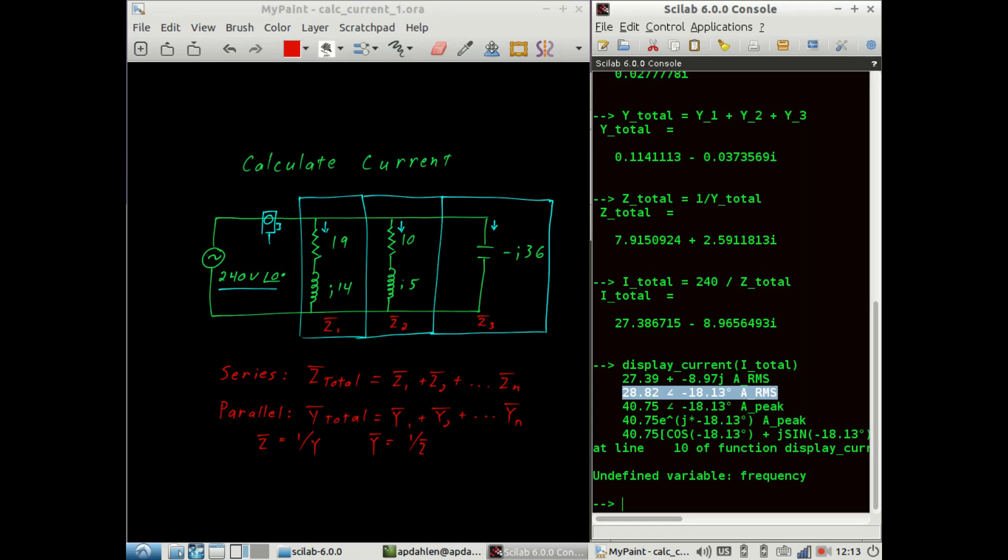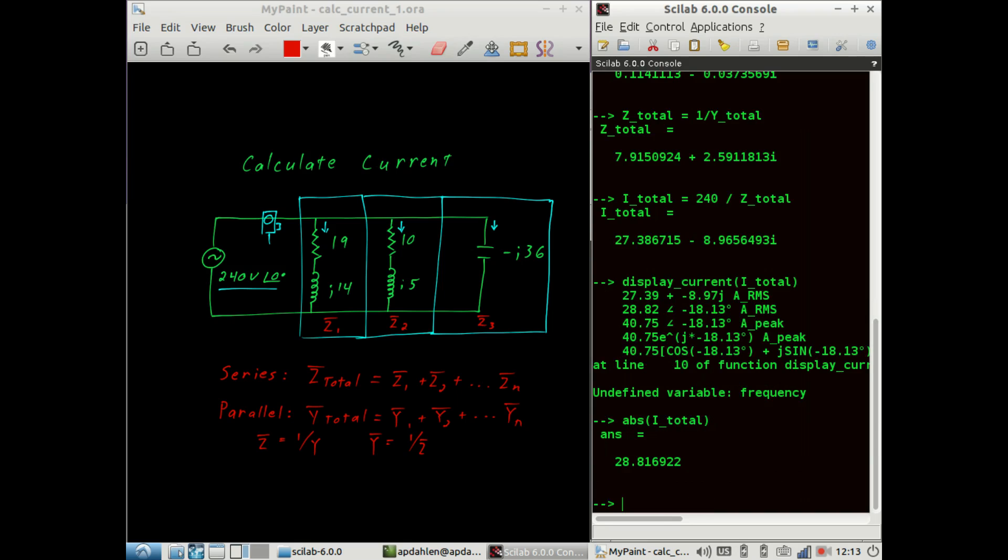And here we see the most important number. So the RMS value of that particular phasor is 28.8 amps. You could also just say the absolute value of the total current, again, about 29 amps.